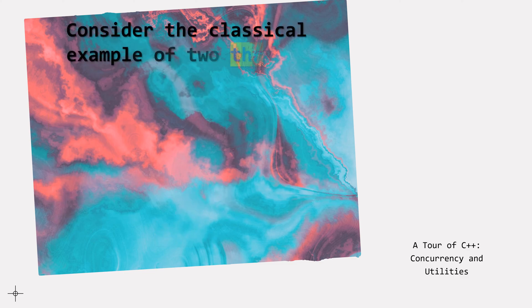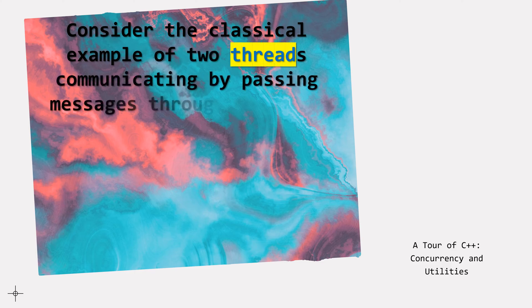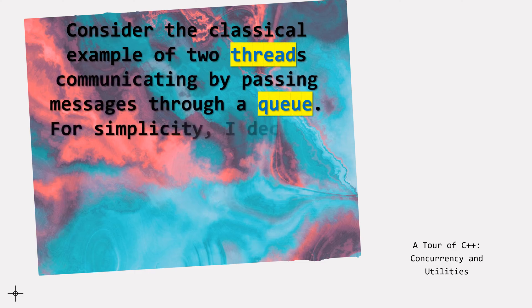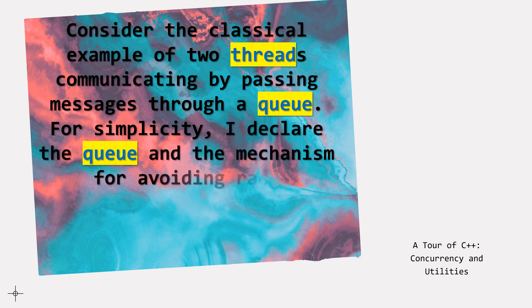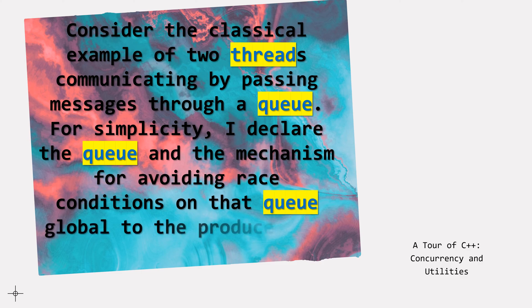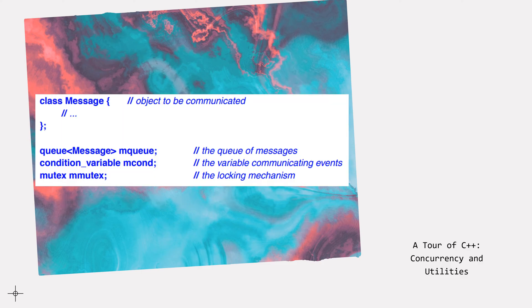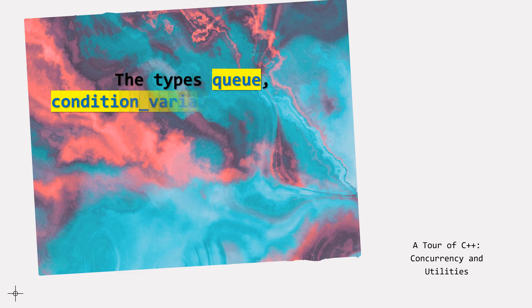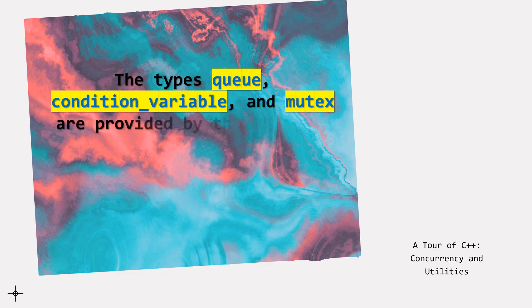Consider the classical example of two threads communicating by passing messages through a queue. For simplicity, I declare the queue and the mechanism for avoiding race conditions on that queue global to the producer and consumer. Class message — object to be communicated. Queue<message> MQ — the queue of messages. Condition_variable MCOND — the variable communicating events. Mutex Mutex — the locking mechanism. The types queue, condition_variable, and mutex are provided by the standard library.